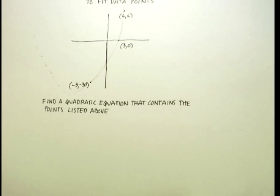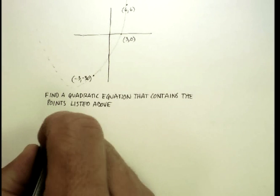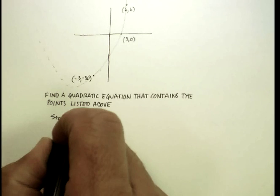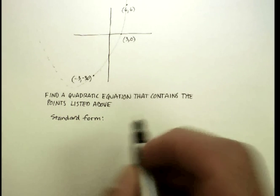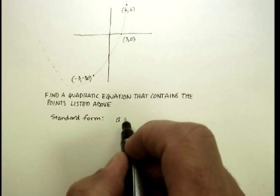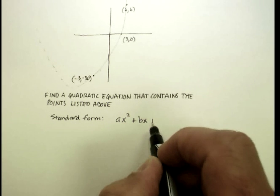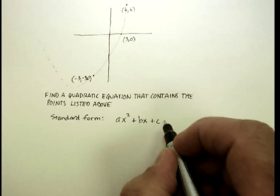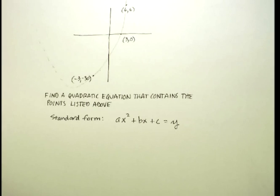Now it would probably be a good idea to remind ourselves what the standard form for a quadratic equation is. The standard form for a quadratic equation is ax² + bx + c = y. Now how can we take that information and use the points that we have and start to create at least a possible way of solving this problem?